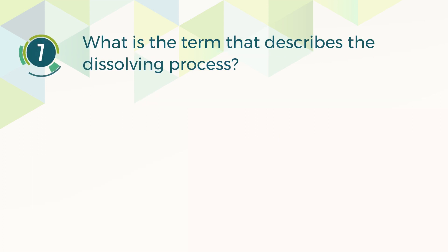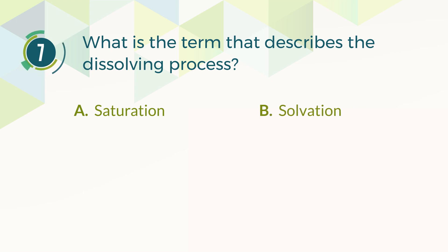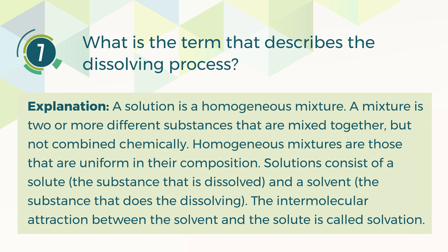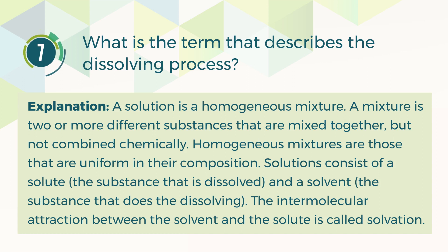Number seven. What is the term that describes the dissolving process? A. Saturation. B. Solvation. C. Solubility. D. Hydration. The correct answer is B, solvation. A solution is a homogeneous mixture of two or more substances mixed but not chemically combined. Solutions consist of a solute — the substance dissolved — and a solvent — the substance doing the dissolving. The intermolecular attraction between the solvent and the solute is called solvation.